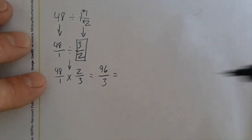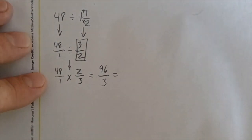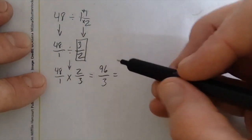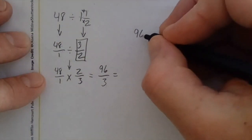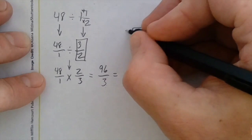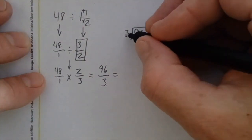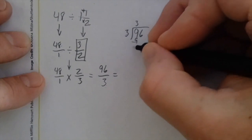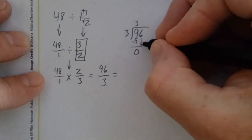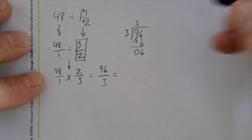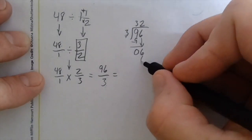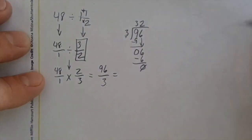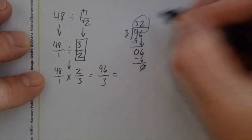To make this number more useful, we want to convert the improper fraction into a whole number or mixed number by dividing from the top to the bottom: 96 divided by 3. I'll work it out: 3 goes into 9 three times, 3 times 3 is 9, subtract to get 0, bring down 6, and 3 goes into 6 twice because 2 times 3 is 6. Subtract to get a remainder of 0. So my answer is the whole number 32.